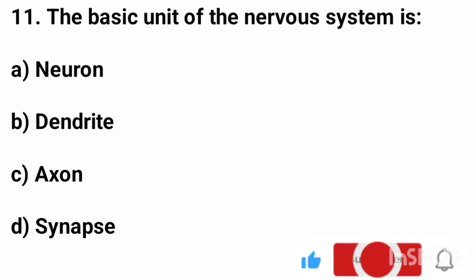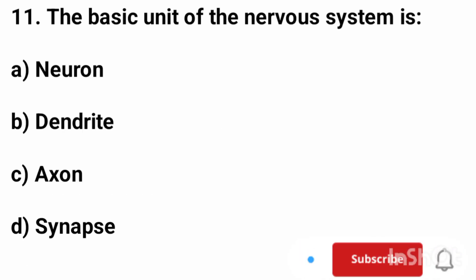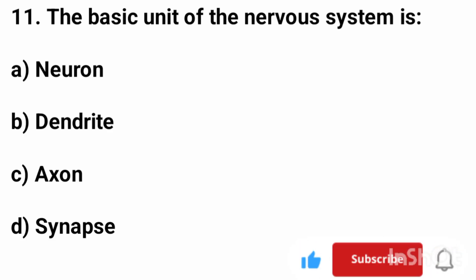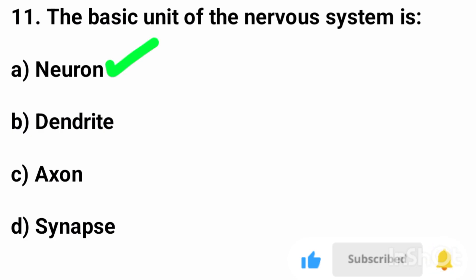Question number 11. The basic unit of the neural system is? The correct answer is option A, neuron.